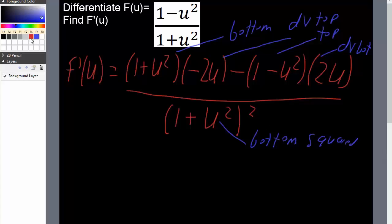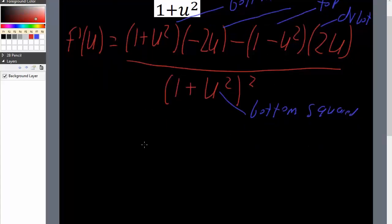Now we just need to simplify a little bit and we'll have our answer. So let me scroll down a little bit. We're gonna get 1 times negative 2u will leave us with negative 2u. Negative 2u times u squared is going to give us negative 2u cubed minus 1 times 2u will be minus 2u.